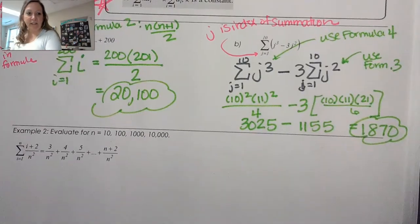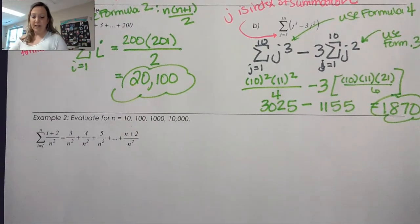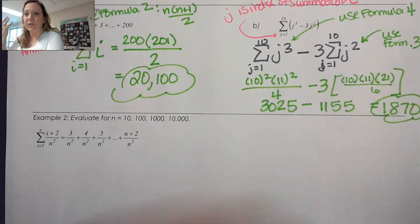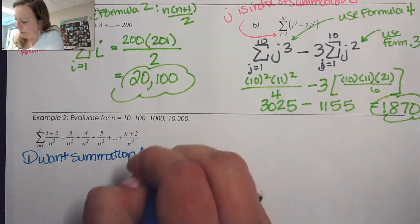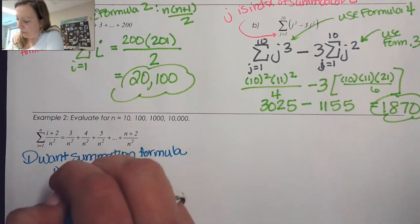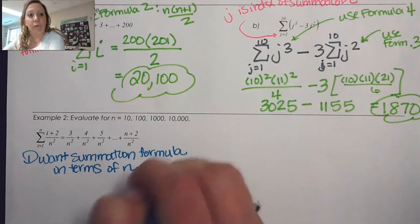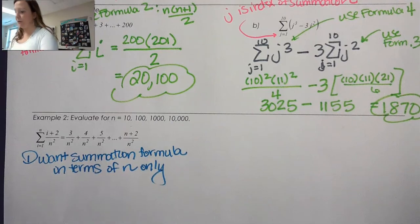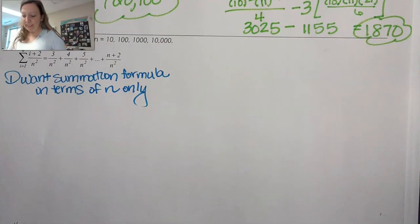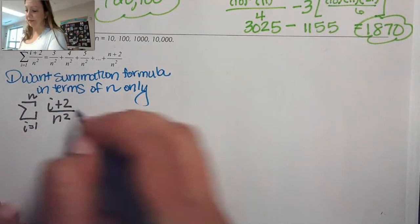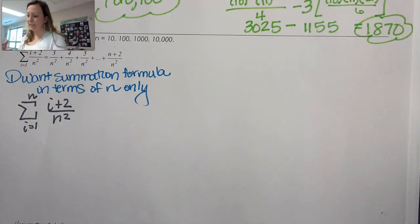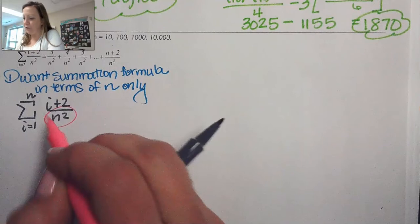In example 2, they ask us to evaluate a sum for many different values of n, so it's better to first express it as a formula in terms of n only, then substitute. We have the sum from 1 to n of (i + 2) over n². Since n² is a constant, we pull it out as 1/n², then split the sum into the sum of i plus the sum of 2.